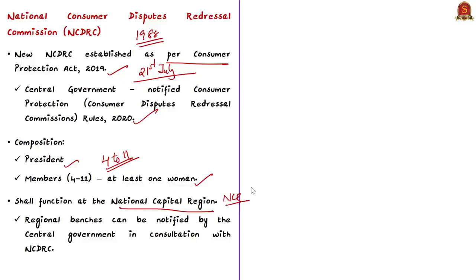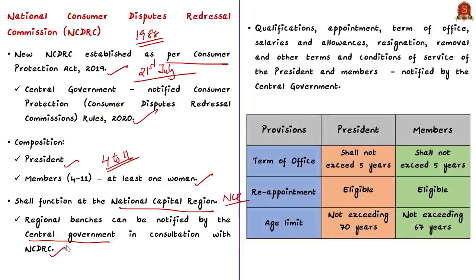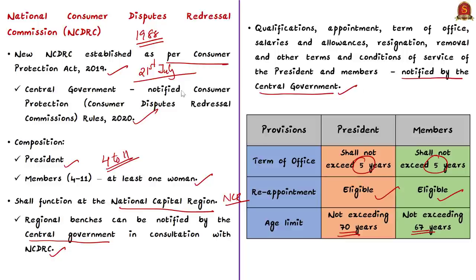The rules also state that at least one member shall be a woman. NCDRC shall function at the National Capital Region, and regional benches will be notified by the central government in consultation with NCDRC. The term of office of the president and members shall not exceed five years, and they are eligible for reappointment. The president shall not hold office if her age exceeds 70 years, and members shall not hold office if their age exceeds 67 years. Qualifications, appointment, salaries, resignation, removal and other service conditions will be notified by the central government.